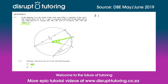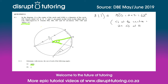So 8.1.1 part A: angle MOS equals 2 times 31, which equals 62 degrees. The reason is that the angle at the center equals twice the angle at the circumference.